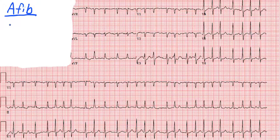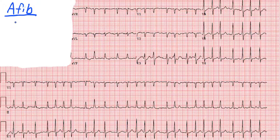So what is AFib? Atrial fibrillation, as the name implies, is when the atria are fibrillating — they're having very quick, rapid, random depolarizations all throughout the atria, and even sometimes on the pulmonary vein. There's not a single SA node; it is the atria themselves that are depolarizing, sending that depolarization from a random spot in the atria down towards the AV node.